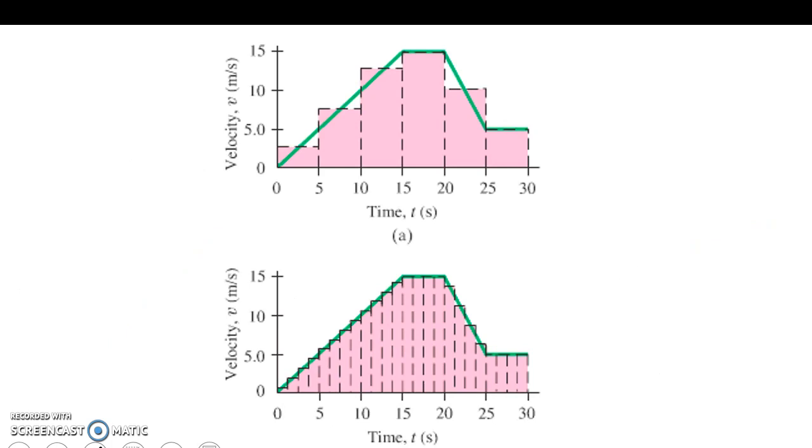The last thing is area under the curve. Anytime we have a velocity time graph, and we can find the area underneath our curve, that will be our displacement. I'm sorry, our distance traveled during that time frame. So we can find distance based off of our area under the curve.